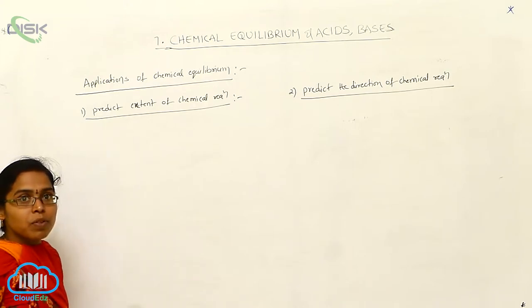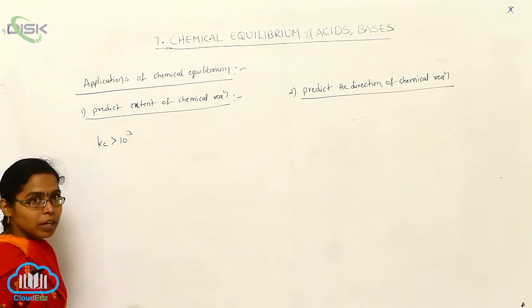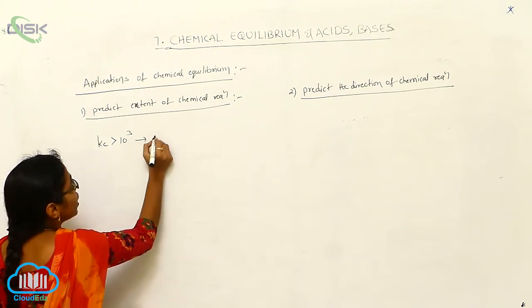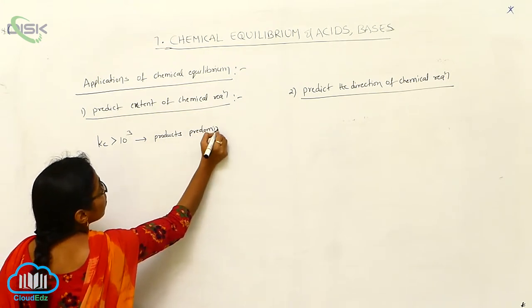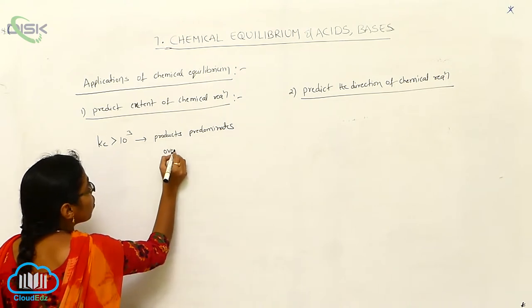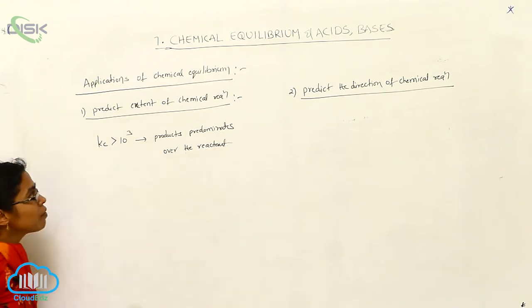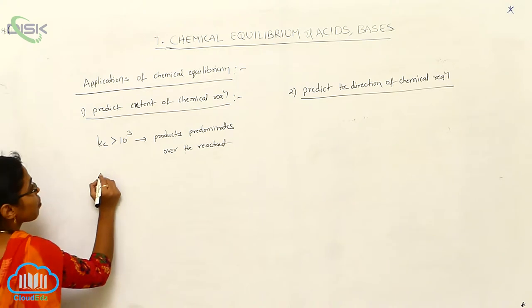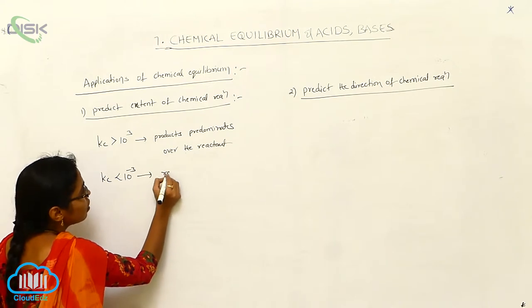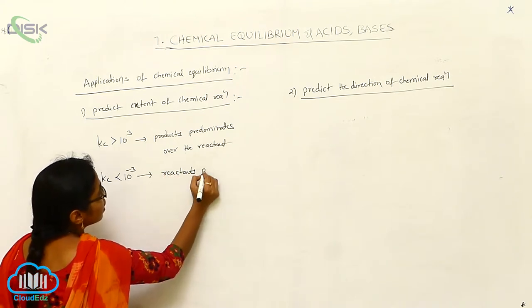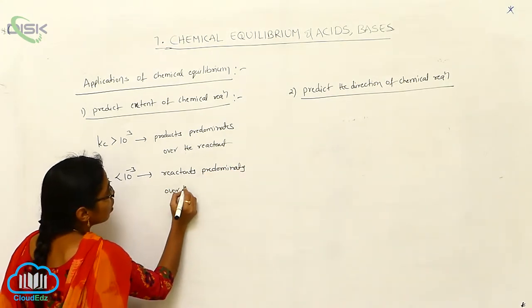Based upon the Kc values: if the Kc value is greater than 10 to the power of 3, that indicates products predominate over the reactants. If the Kc is less than 10 to the power of minus 3, it indicates quite the opposite — reactants predominate over the products.